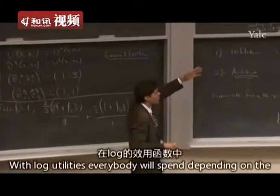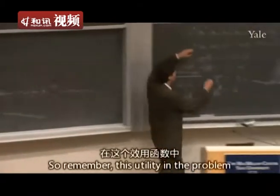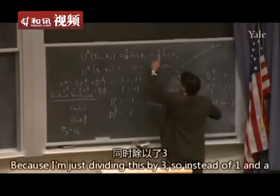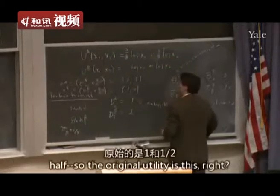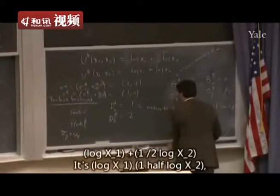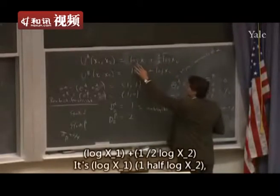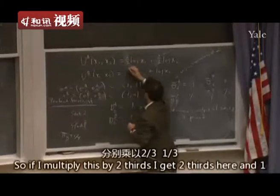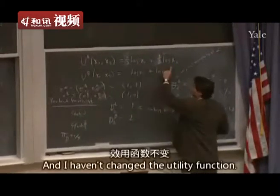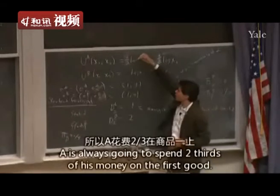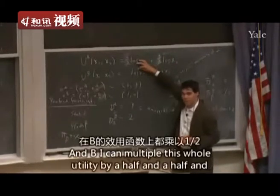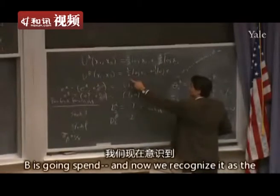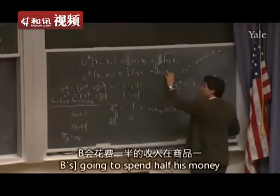So when we're solving, we're solving for P1 and P2 as present value prices. With log utilities, everyone will spend amounts depending on the coefficients. A's utility, log X1 plus one-half log X2, is the same as two-thirds log X1 plus one-third log X2 after normalization, since the sum of coefficients is three-halves. Now I recognize it as a familiar Cobb-Douglas pattern: A is always going to spend two-thirds of his money on the first good. B has a half-half split, so B spends half his money on each good.